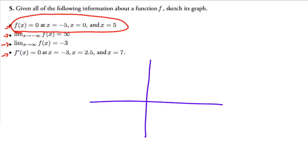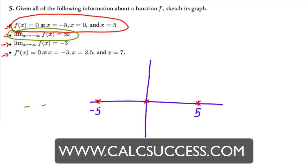The first condition says f(x) equals zero at x equals negative five, zero, and five. So if negative five is here and positive five is here, the function has to hit at each of those three points. The next condition says the limit as x approaches negative infinity — over here in this direction — the function should go towards infinity.